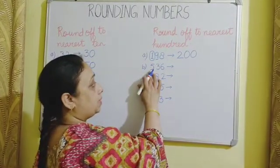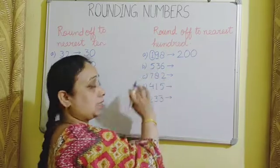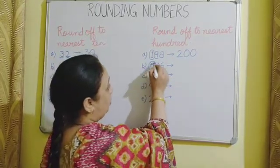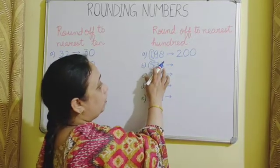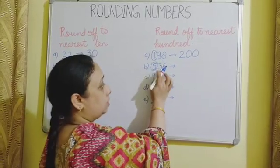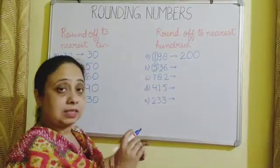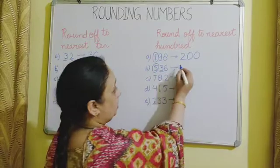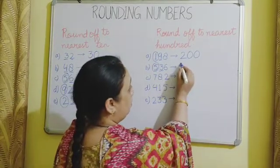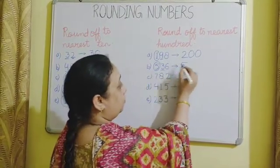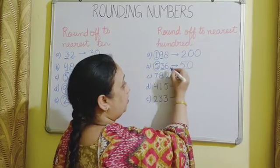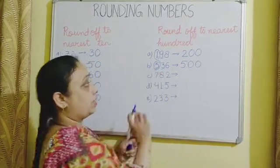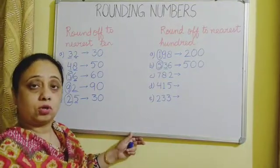Our next number is 536. Find the number to round off, then look to the right — that is the 10's place. We have the digit 3, and this 3 is less than 5. So 5 will remain unchanged, and in place of 3 we place 0, and in place of 6 we place 0. Therefore, 536 is rounded off to 500.